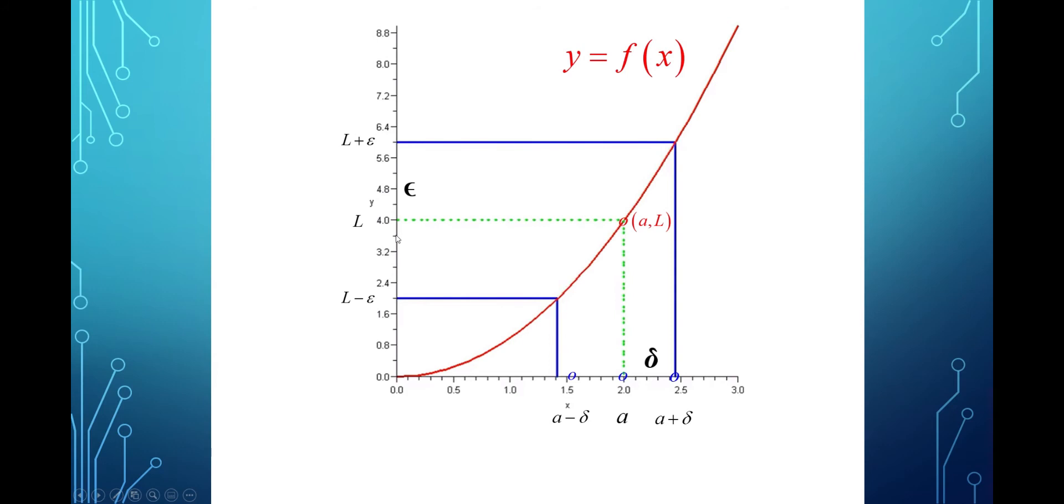And that f(x) value, that function value, will always be between your l minus epsilon and l plus epsilon. And that you can do this no matter how close to zero you make epsilon. So that could be a tiny little interval there. And you can find a small enough interval around here such that every value for x in this interval gives you a function value in that interval.